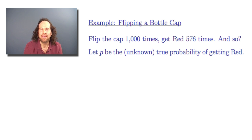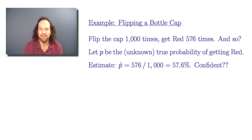If we let p stand for this unknown but true probability of getting red when you flip the cap, then we could estimate p just by the proportion. So the estimate, which we'll write as p-hat again, is 576 divided by a thousand, or 57.6%.